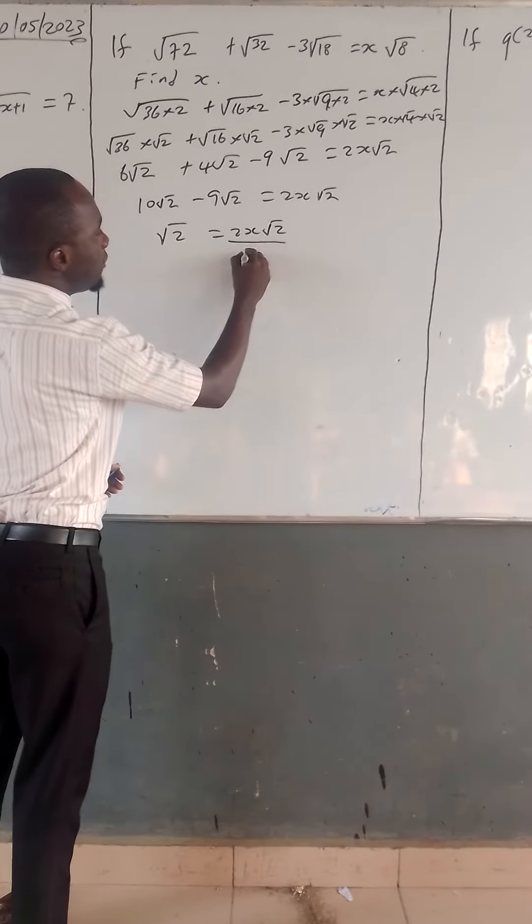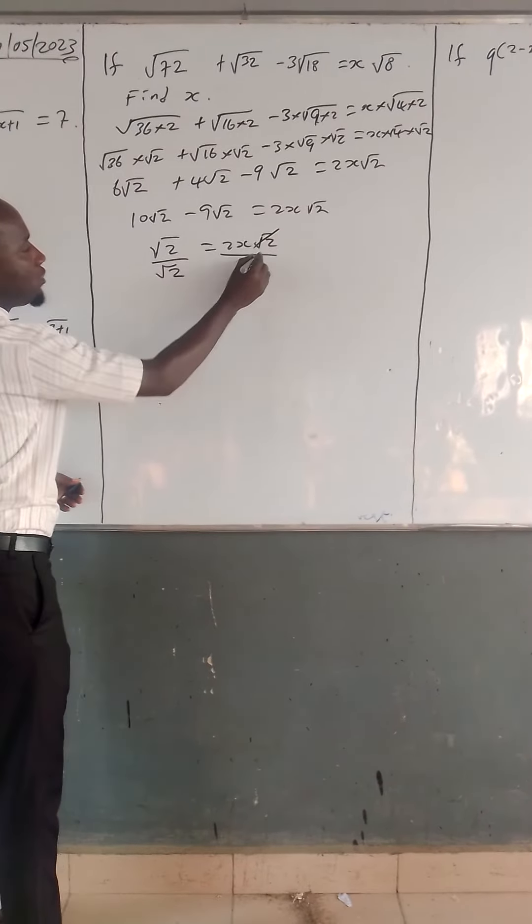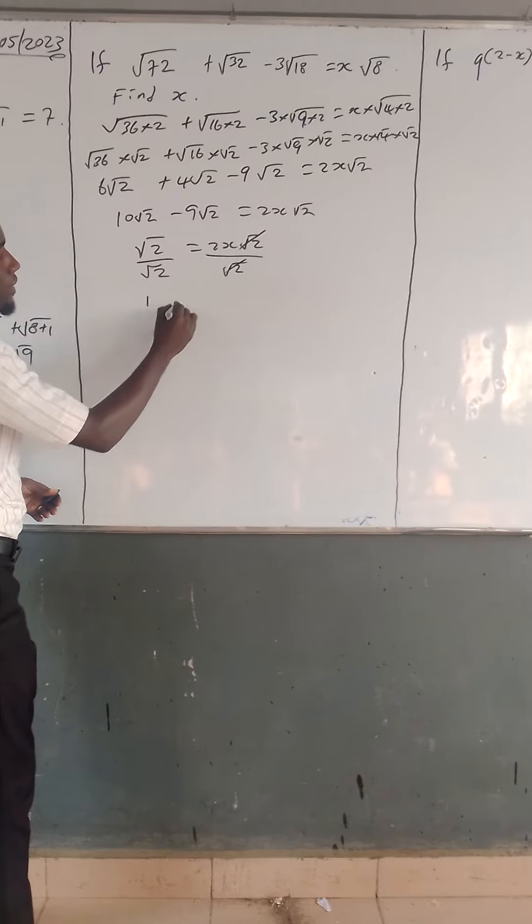Then we divide both sides by square root of 2. Square root of 2 here cancels with square root of 2.